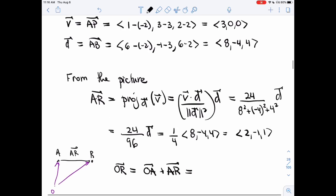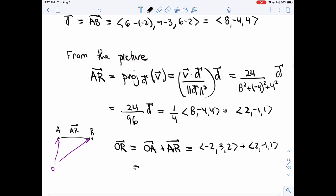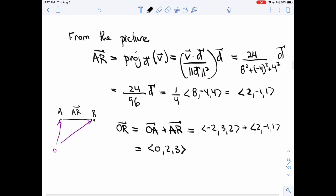And so OA, A is minus 2, 3, 2, plus 2, minus 1, 1. That's 0, 2, 3. And so the coordinates of R are 0, 2, 3.